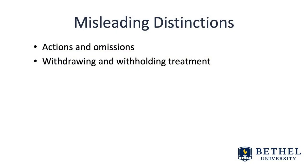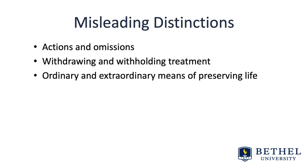A third distinction DeVetter cautions against is between ordinary and extraordinary means of preserving life. This distinction is not as commonly used as it was in the past, but it still warrants discussion. In the past, it was common to recognize that although human life is an important value, ethical behavior does not require people to use extraordinary means to preserve it. Thus, it was morally acceptable for patients, families, or providers to withhold or withdraw extraordinary treatment even if death was the result. It was not morally acceptable to forego ordinary treatment. The obvious problem with this argument is that what is considered ordinary and extraordinary is not clear-cut.